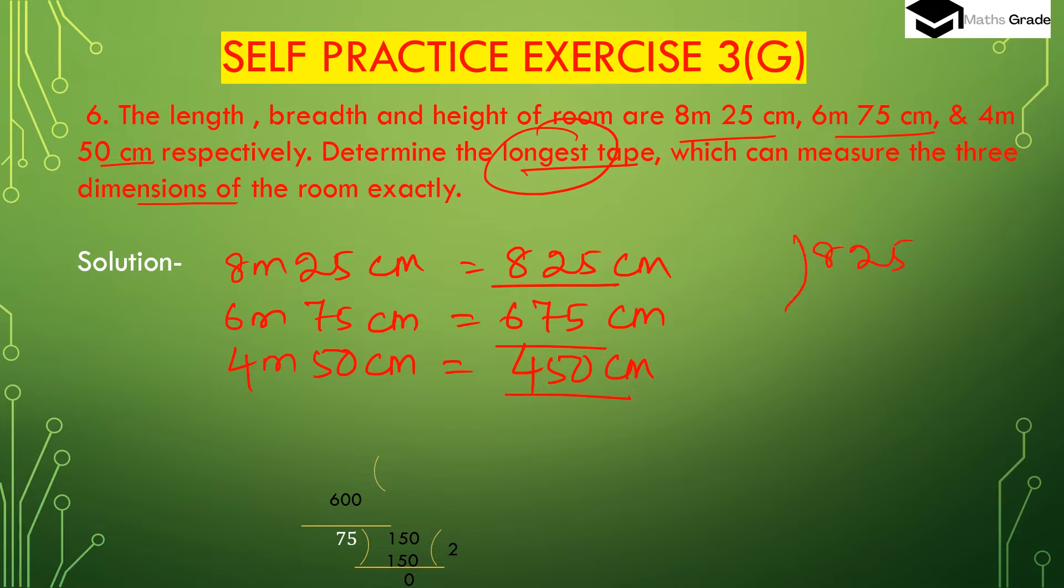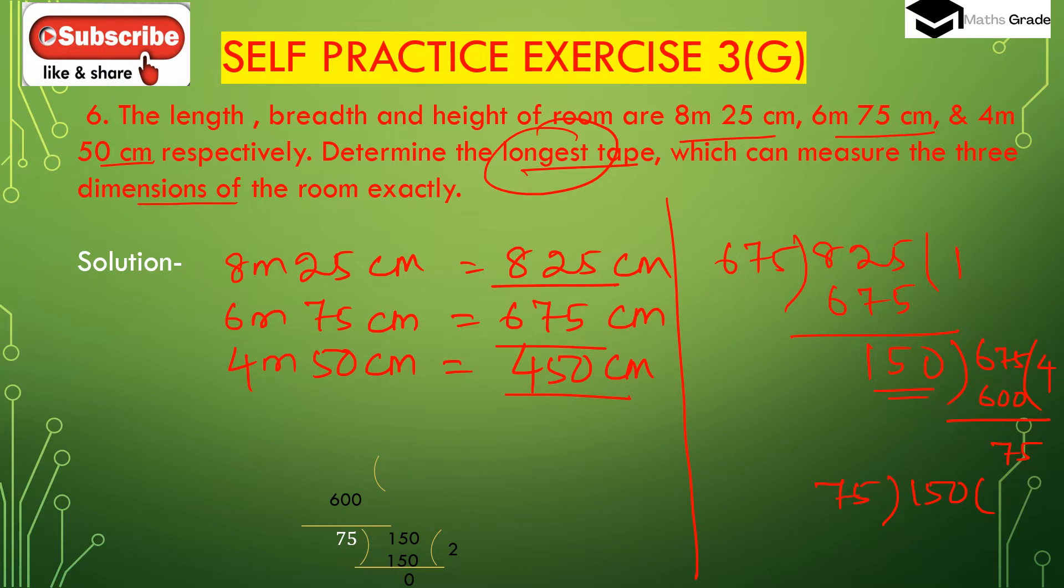Using long division method for 825, 675, and 450. First, 825 divided by 675 gives quotient 1, remainder 150. Now 150 is the divisor, and 675 is divided by 150. This gives 4 times 150 equals 600, remainder 75. Then 75 is the highest common factor.